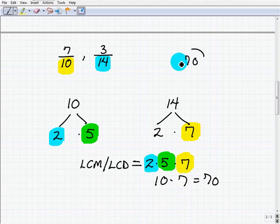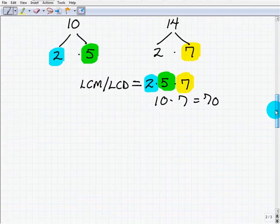2 times 5 times 7 or 10 times 7 is 70. So 70 is the lowest number that both 10 and 14 divide into. So 70 is our LCD. Let's move on.